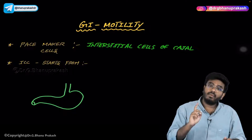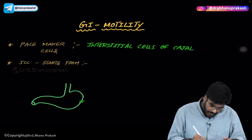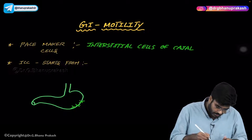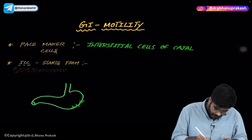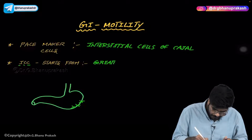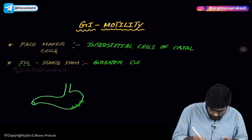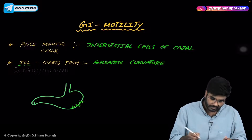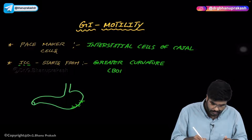The Interstitial Cells of Cajal do not start from the esophagus. They start from the greater curvature of the body of the stomach. So ICC — Interstitial Cells of Cajal — start from the greater curvature, specifically from the body region of the stomach.